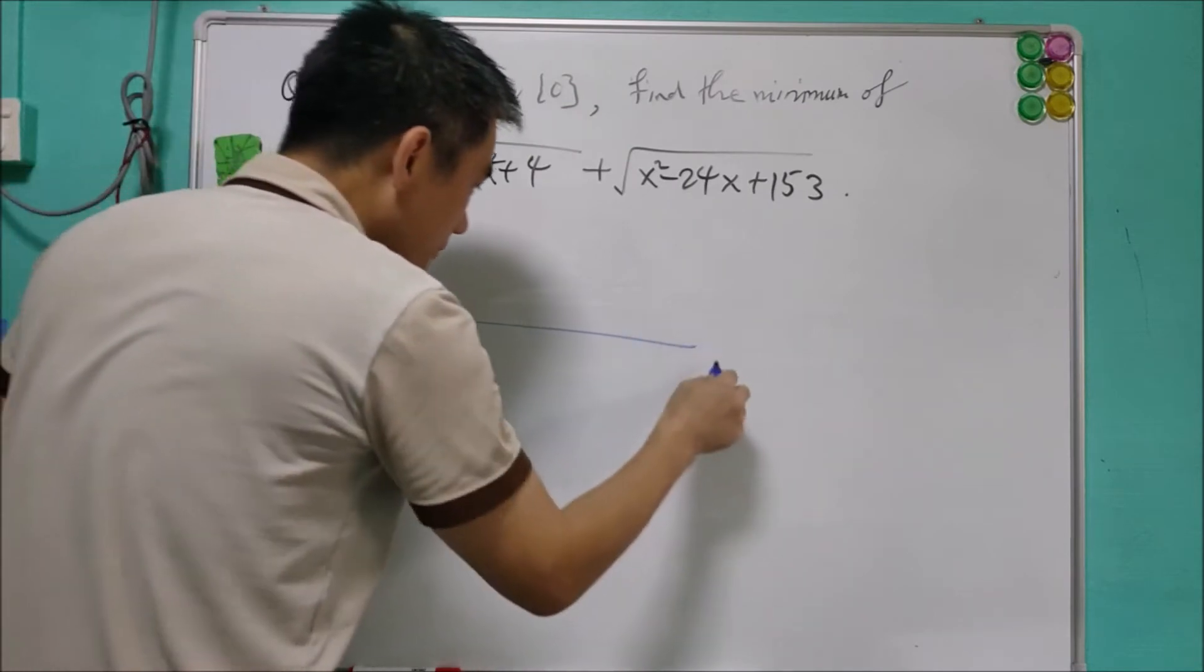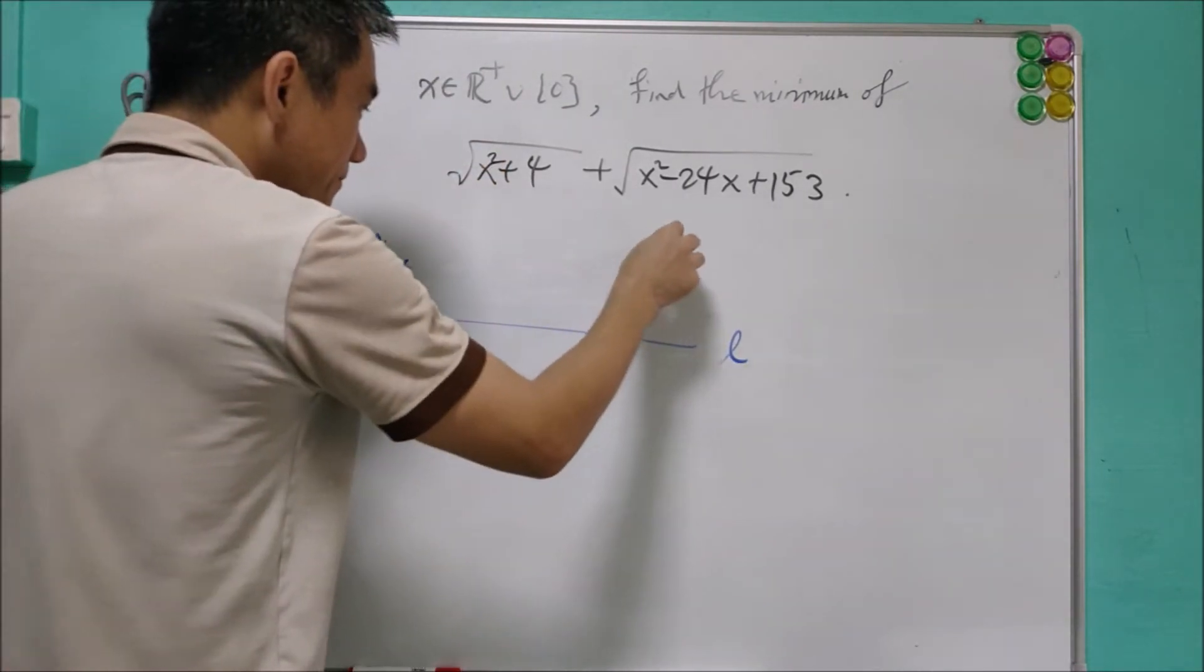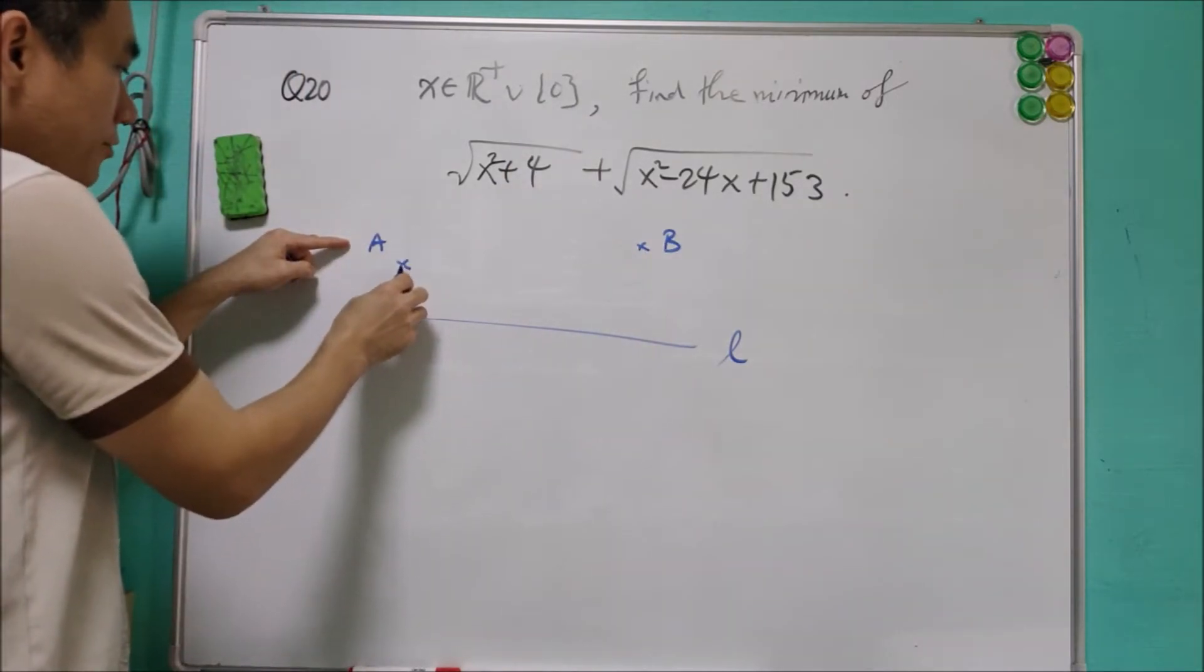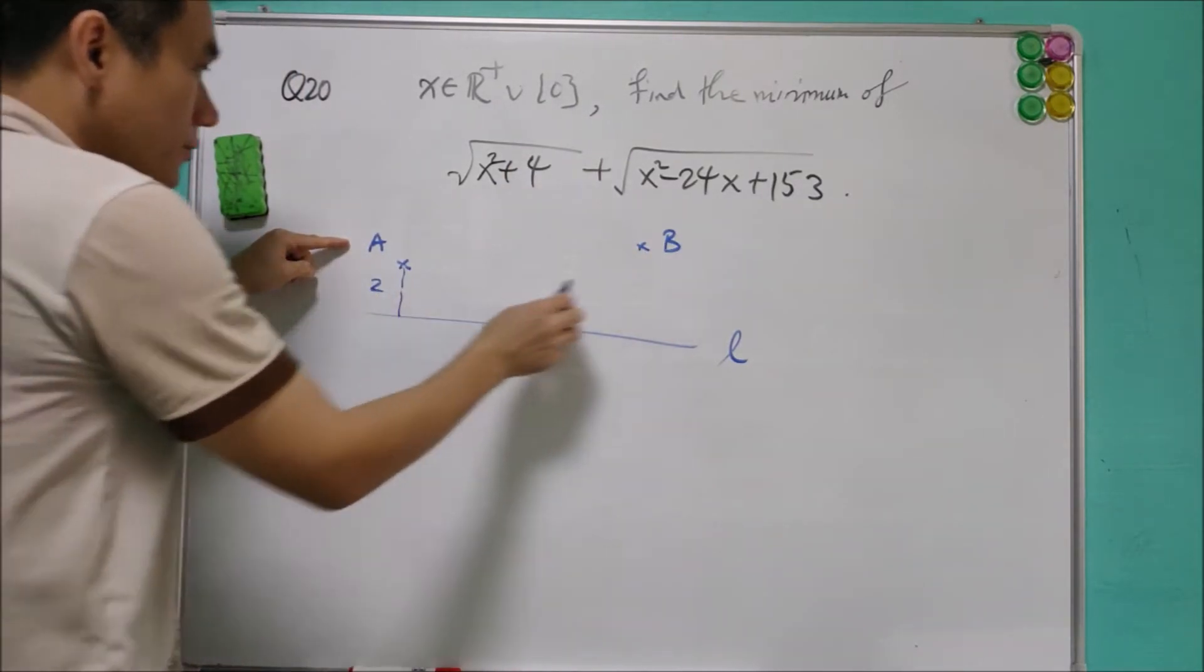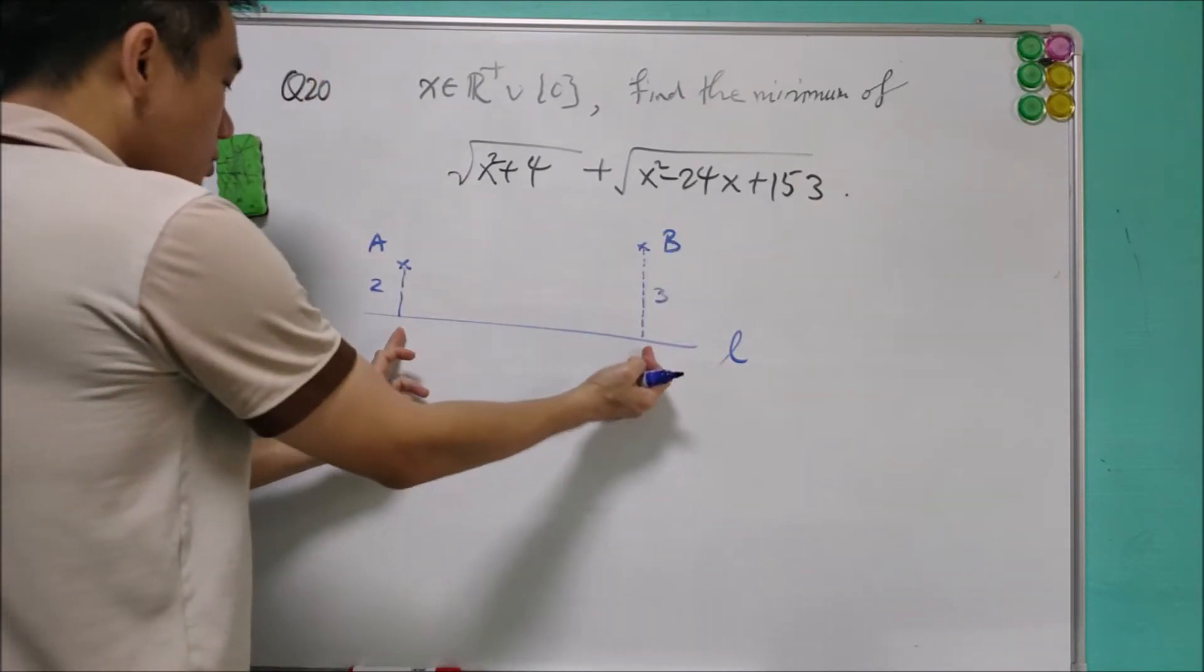Consider a line L and two points A and B, where the distance A from L is equal to 2, distance B from L is equal to 3, and this is equal to 12.